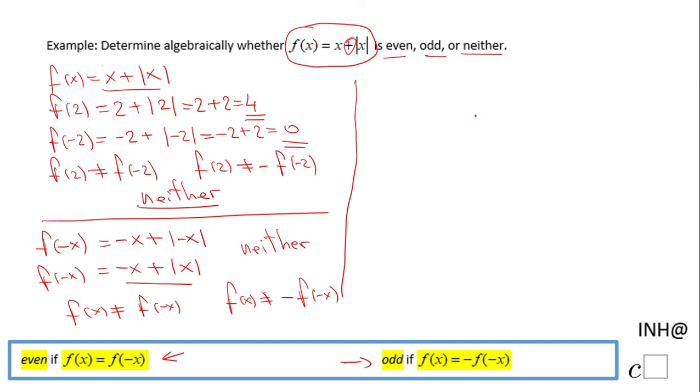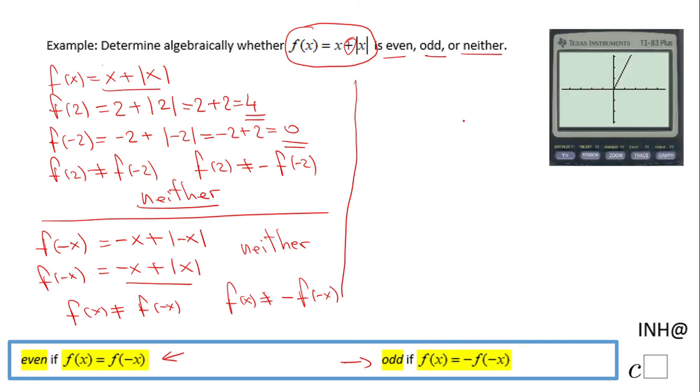You can also use a graphical approach. I used a TI calculator. This is the graph of x + |x|. You cannot see the left side because it's on top of the x-axis. All the outputs for x < 0 will be 0.